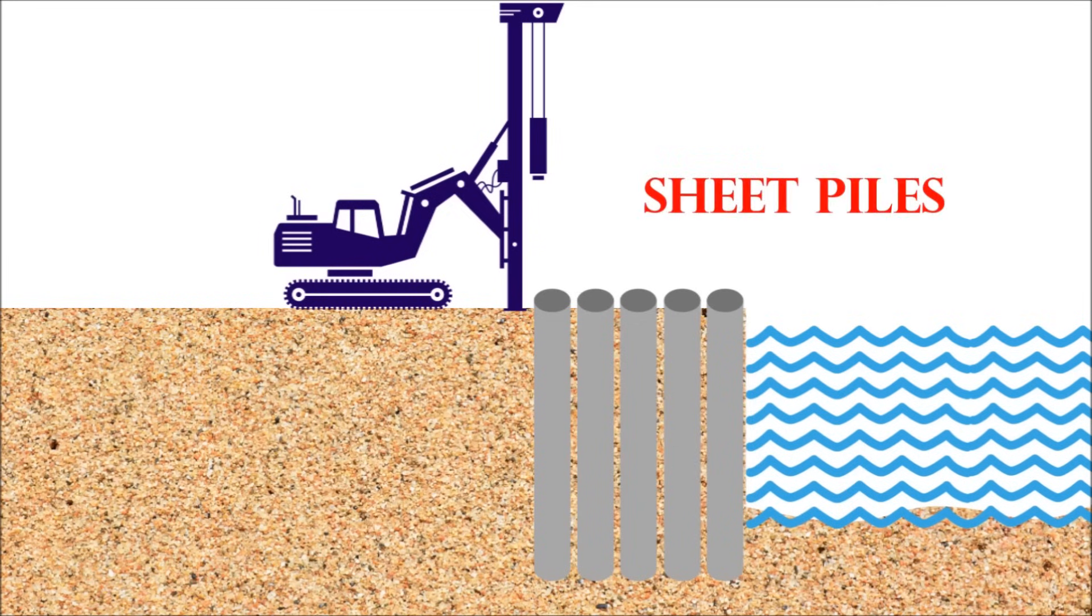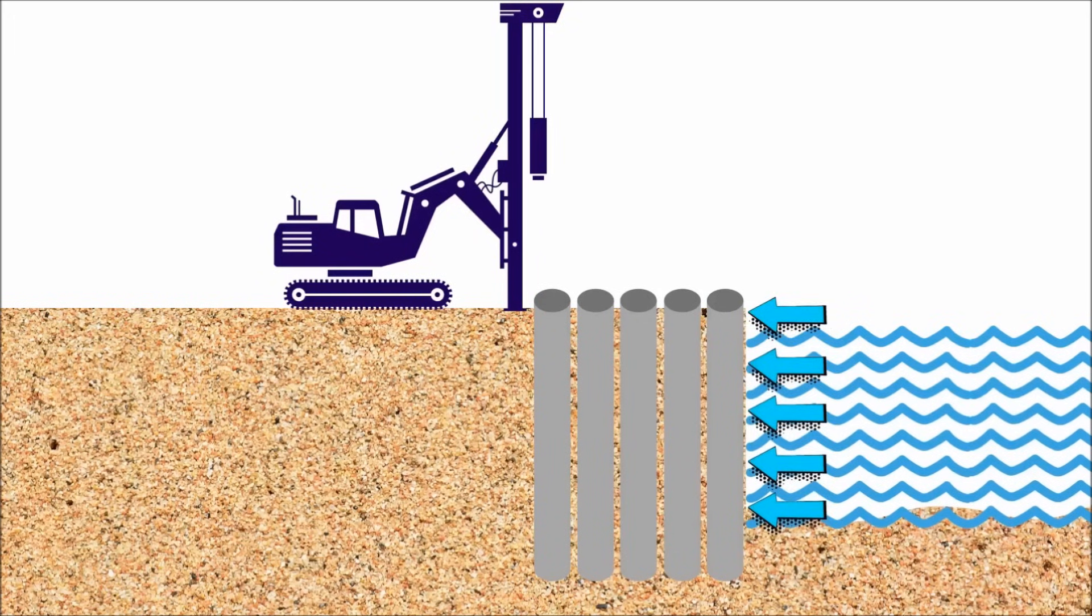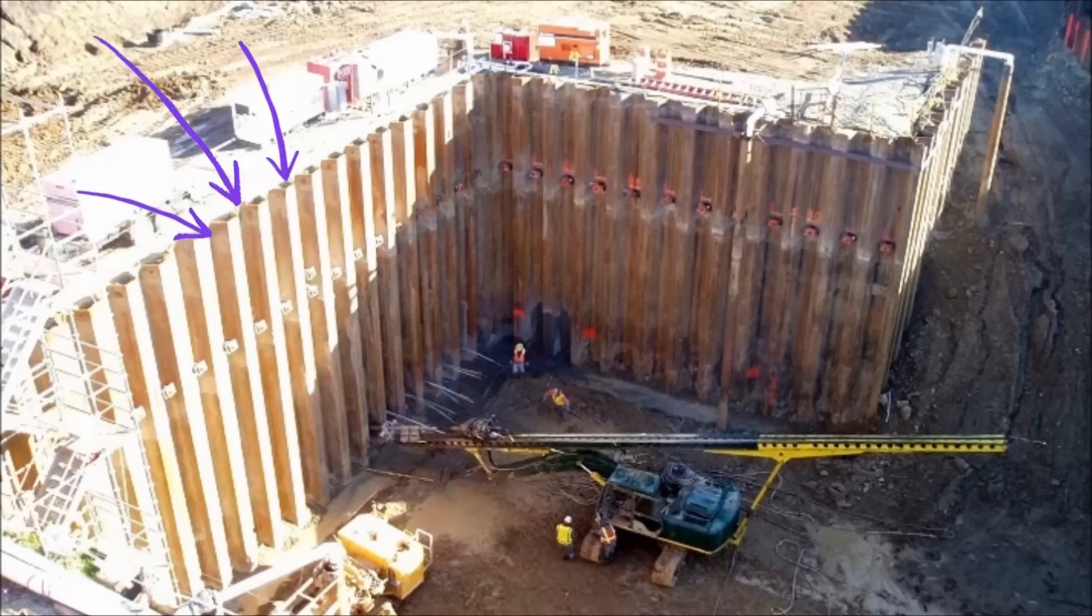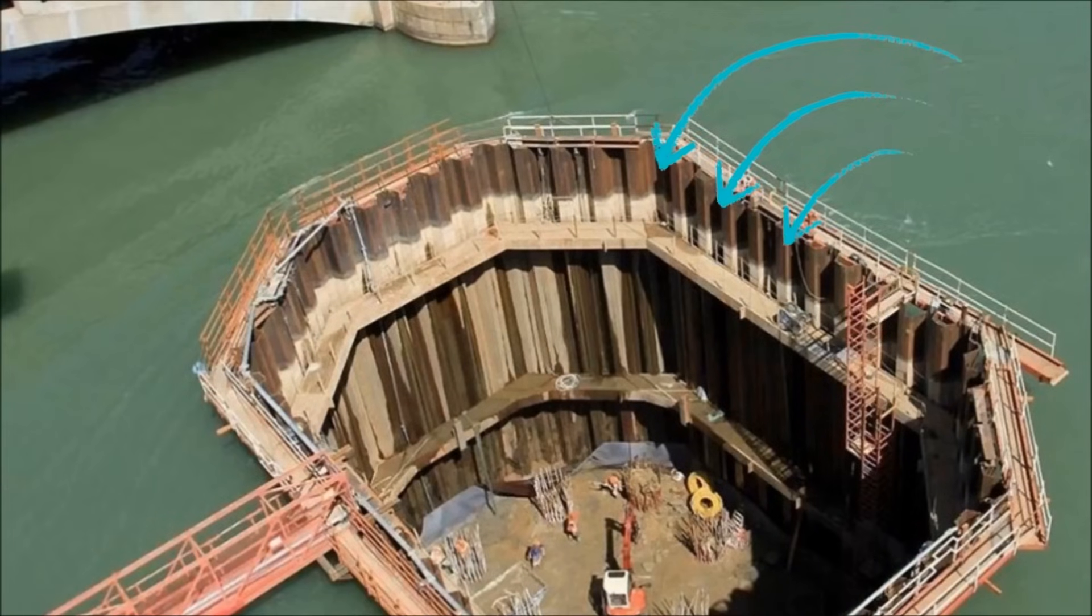Sheet piles. These types of piles are used to provide lateral support. Usually they resist lateral pressure from loose soil, the flow of water, etc.